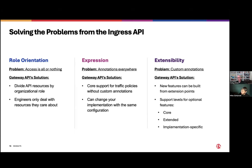In the Gateway API, the support levels of optional features are core, extended, and implementation-specific. We can get into some of those when we talk about our roadmap and where those integrate.